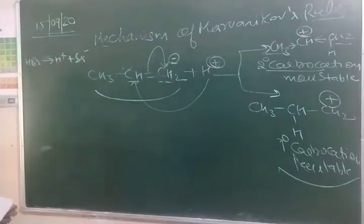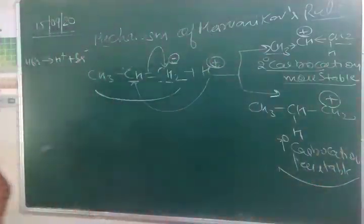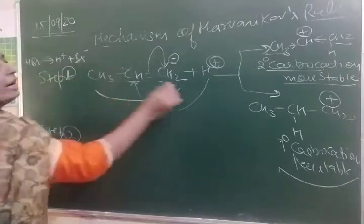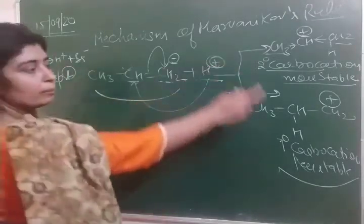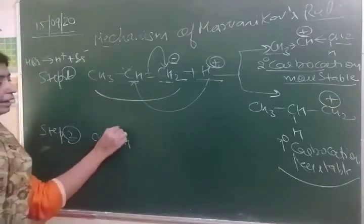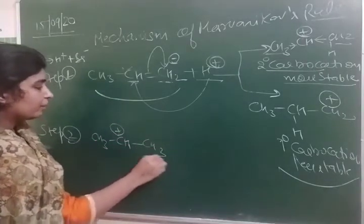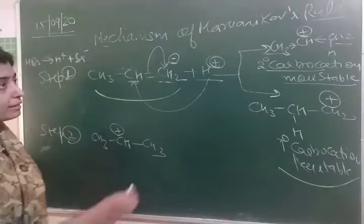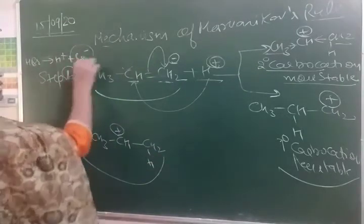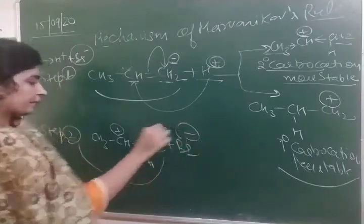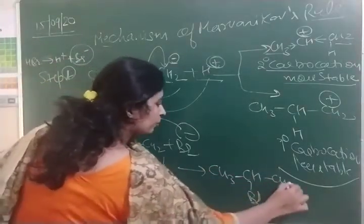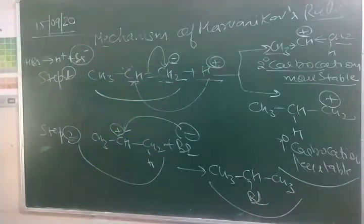So the secondary carbocation is much more stable. In step 2, I am adding H⁺ and there are two possibilities — a more stable product and a less stable product. Secondary carbocation is here, and H⁺ comes here. Now Br⁻ is present, and the Br⁻ ultimately goes to the positive charge. And 2-bromopropane will form. 2-bromopropane is the product of Markovnikov's rule.